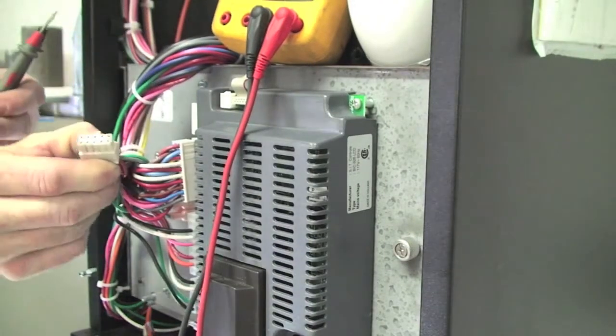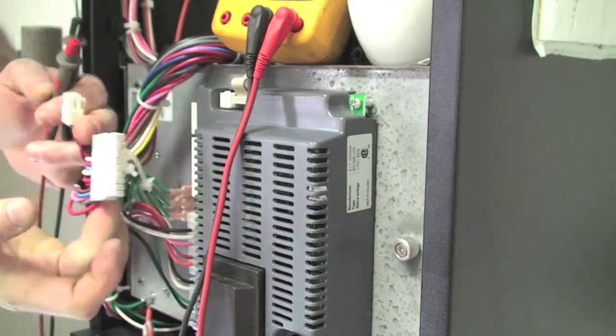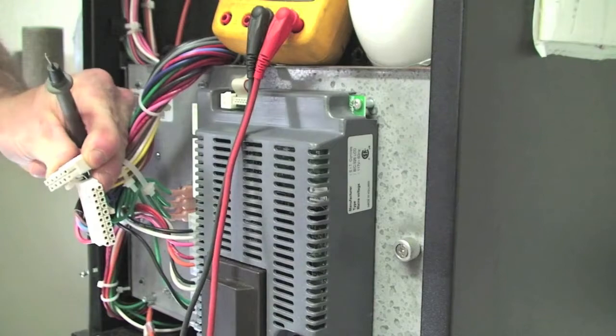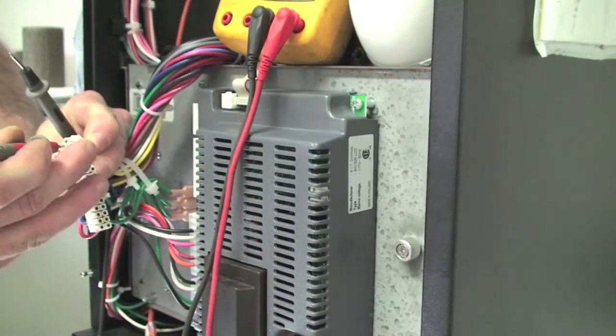To check wiring, first remove the 10 pin Molex connector and the 20 pin Molex connector from the control board. Once the two connectors are removed, locate the yellow wires in each connector.